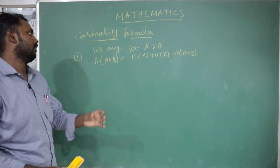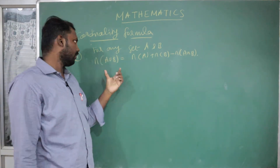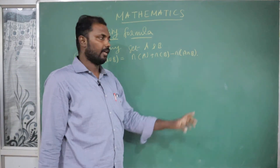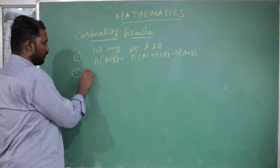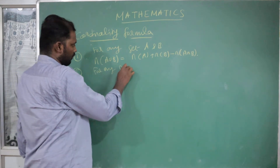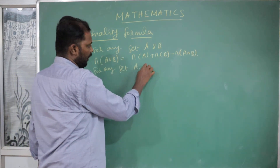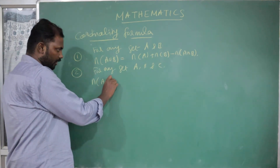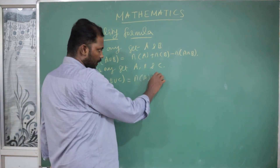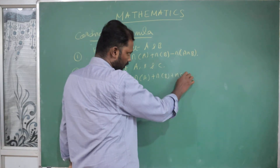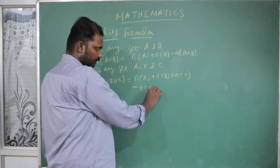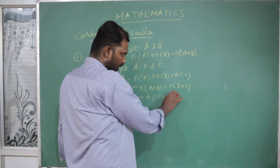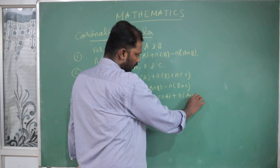The cardinality formula tells us the number of elements in a set. N of A union B equals N of A plus N of B minus N of A intersection B. For three sets: N of A union B union C equals N of A plus N of B plus N of C minus N of A intersection B, minus N of B intersection C, minus N of C intersection A, plus N of A intersection B intersection C.